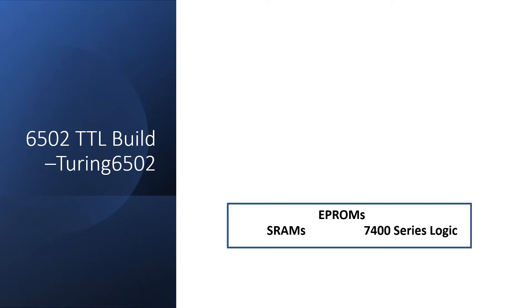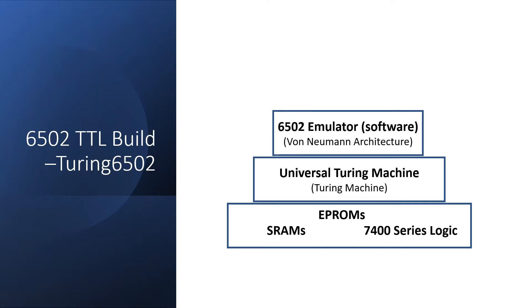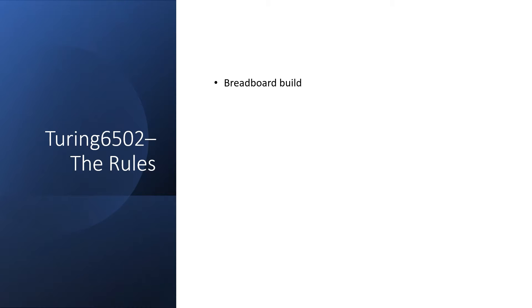At the lowest level, I'll have some memory chips such as EPROMs and Static RAMs, and some 7400 Series Logic. From them, I'll build a universal Turing machine, and on this universal Turing machine I'll run a 6502 emulator, and then on top of that I'll run Apple II Pac-Man. And for this build, I'm going to go back to breadboards.